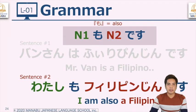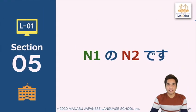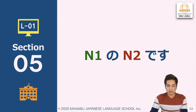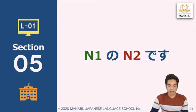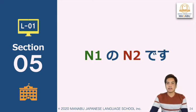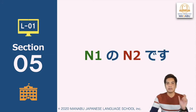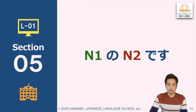Our next grammar point is Noun 1 no Noun 2 desu. We will now have another particle — the particle no. So we have learned the particle wa, the particle mo, and now the particle no.